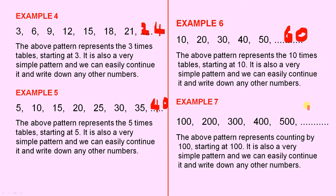And in example 7, the above pattern represents counting by 100 starting at 100. 100, 200, 300, 400, 500. So we know that the next one is definitely 600.